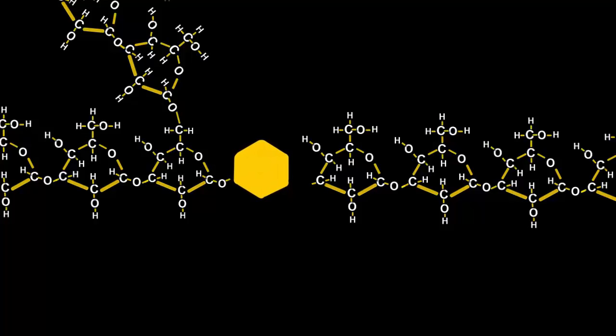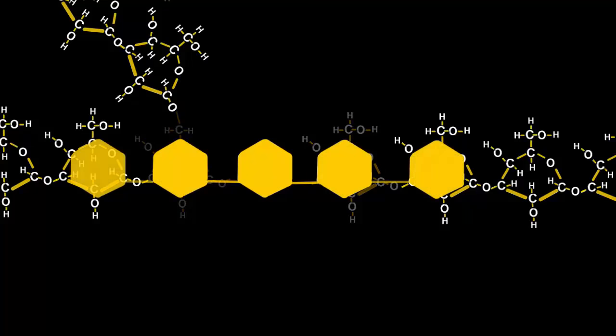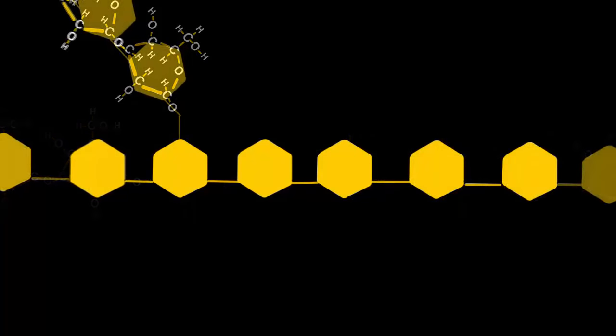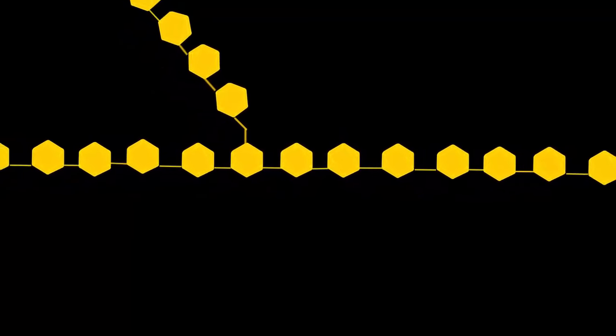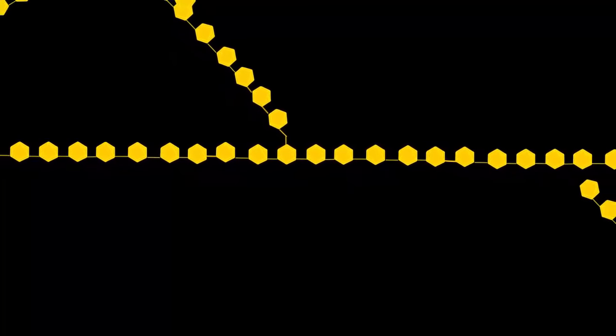We'll simplify the glucose molecules by replacing them with simple hexagon shapes. When we zoom out you can see the branches and the branches of branches. Some molecules can be curly, others are spiral, and they're all flexible.